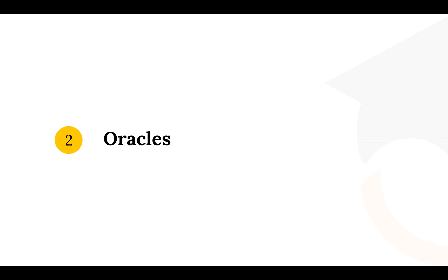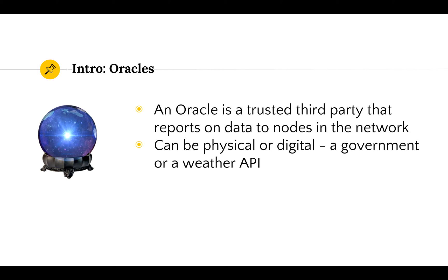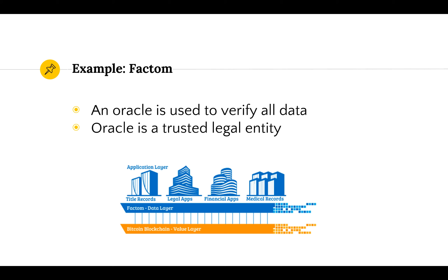Another consensus method is oracles. An oracle is a trusted third party that reports on data to nodes in a network. Oracles can be physical or digital — a government or legal entity is an example of a physical oracle, and a weather API is an example of a digital oracle. Factom is an example of a blockchain that uses oracles to verify all of the data that's put on the blockchain.